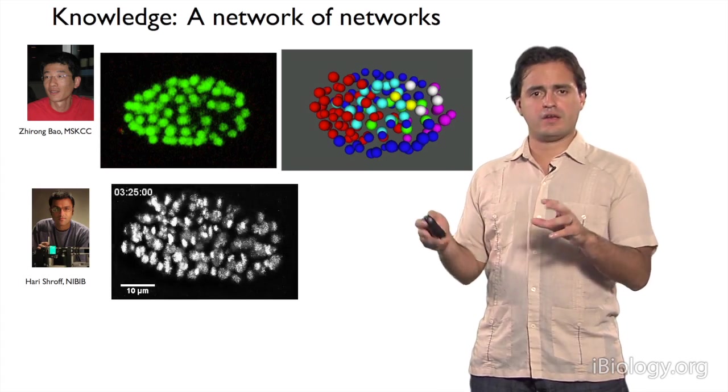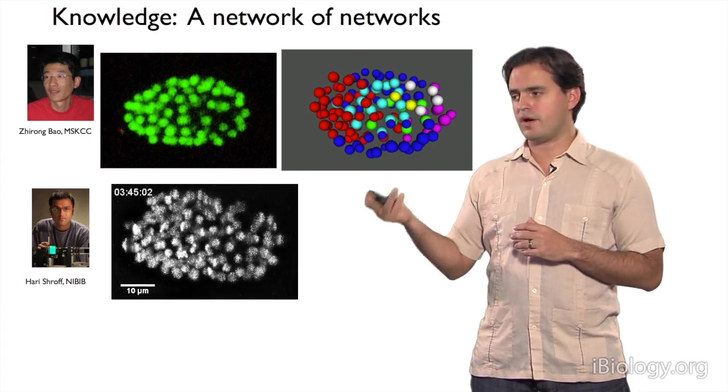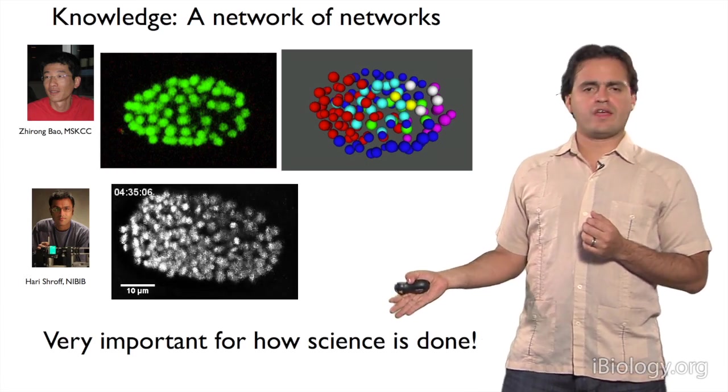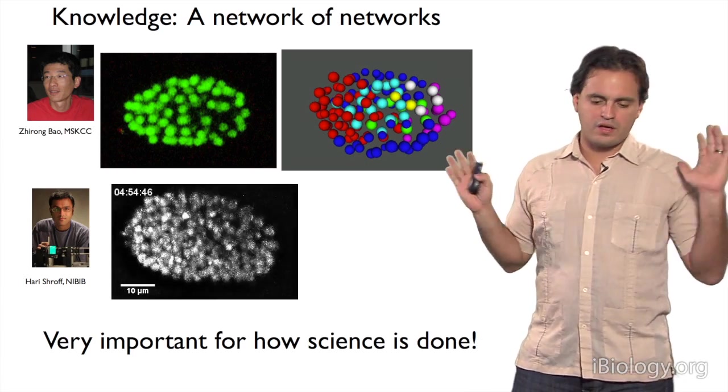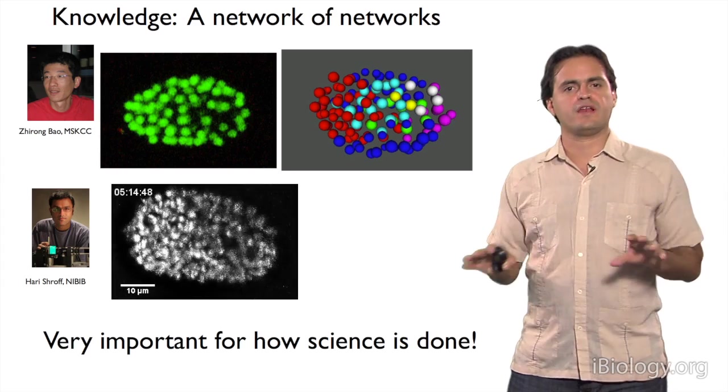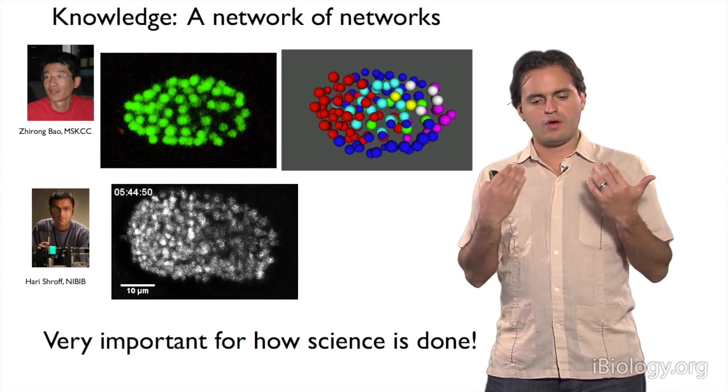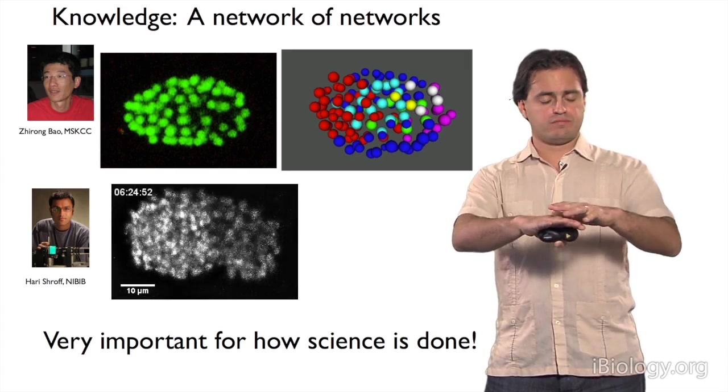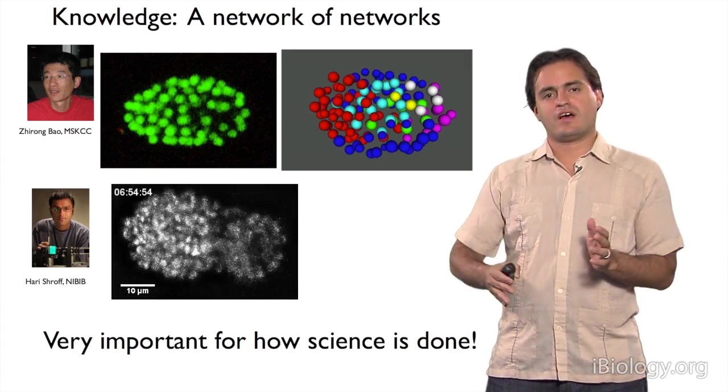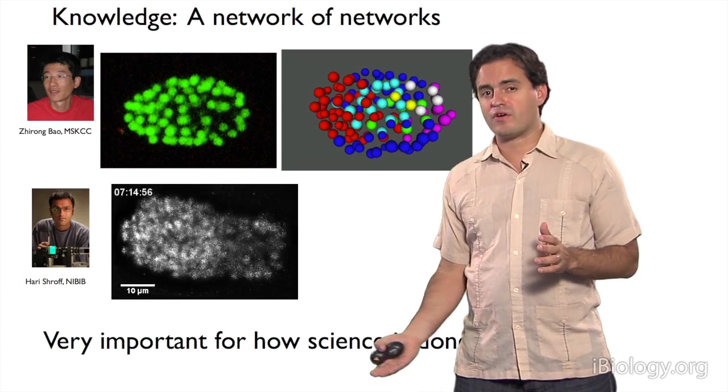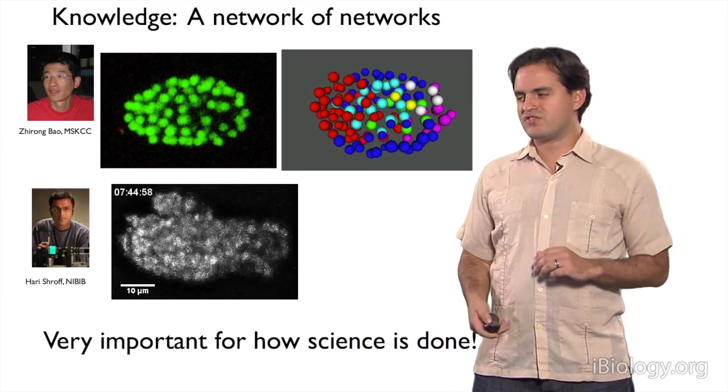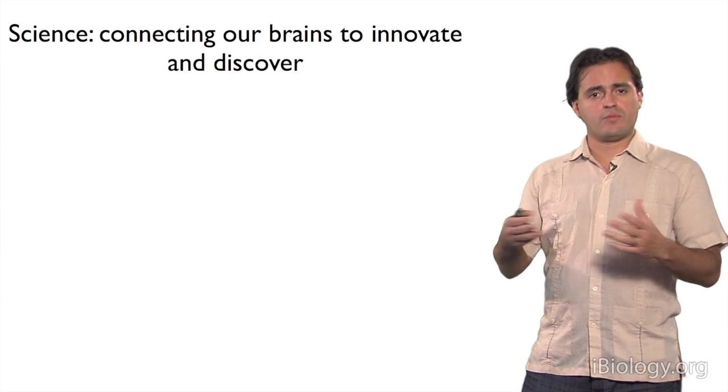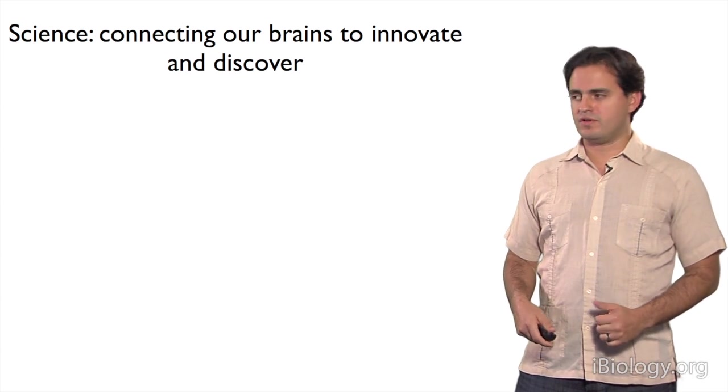So all of a sudden, by linking our brains, we were able to do more than we could have each done individually. And this is actually very important because this is how science is done at all levels. Even if you're claiming to be a scientist that you work completely alone, you're actually receiving knowledge from other colleagues that could be contemporaries, or it could be colleagues that passed away that generated knowledge before you came along, and you're building on that knowledge. So in that sense, science is actually a network of networks, and it's a community where we're continuously building on other people's knowledge.